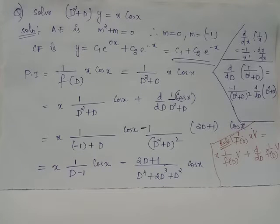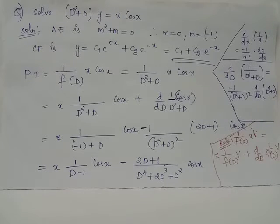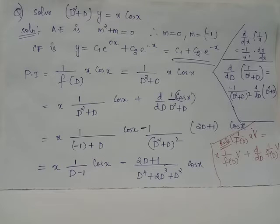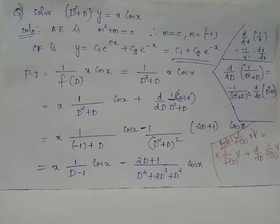Therefore, the complementary function will be y = c1·e^(m1·x) + c2·e^(m2·x). Since e^(0·x) = e^0 = 1, the complementary function is obtained as c1 + c2·e^(-x), where c1 and c2 are arbitrary constants.